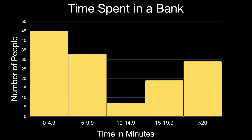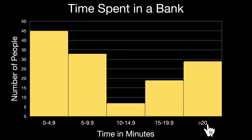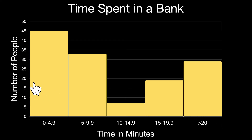To clarify further with a different example — now let's look at the time in minutes that a person spends in a bank. Somewhere between zero and 4.9 minutes, around 45 people spent time in that interval. We can see that the fewest number of people spent somewhere between 10 and 14.9 minutes. And roughly just under 30 people spent more than 20 minutes in the bank. The big idea with the histogram: these values are ranges, bins, or classes, and we compare that to the frequency of each bin or range.